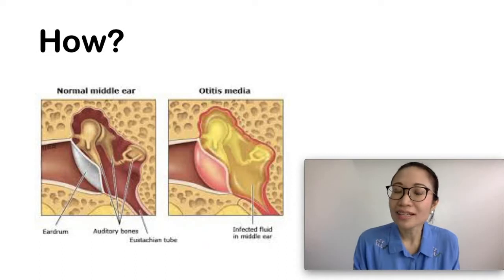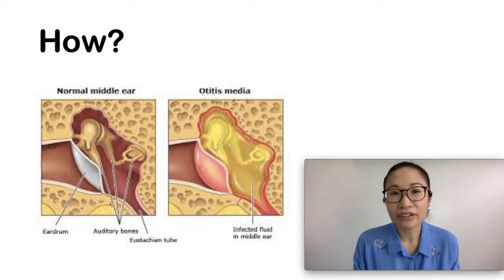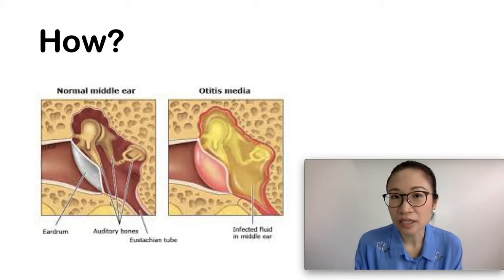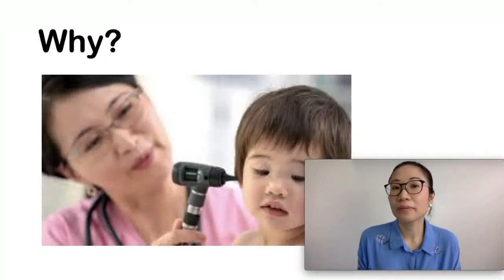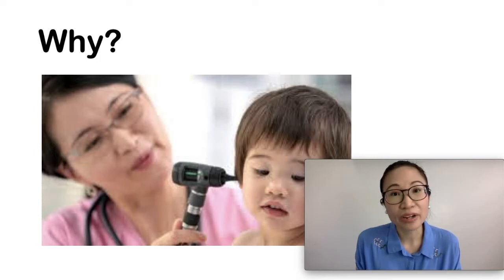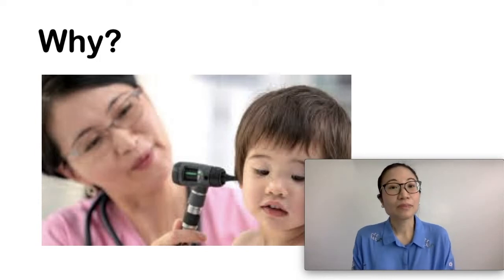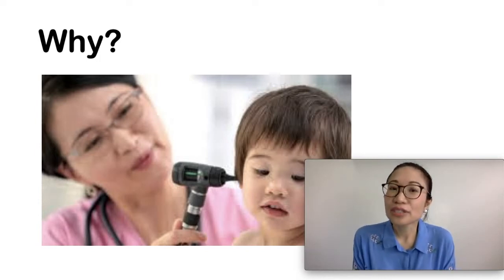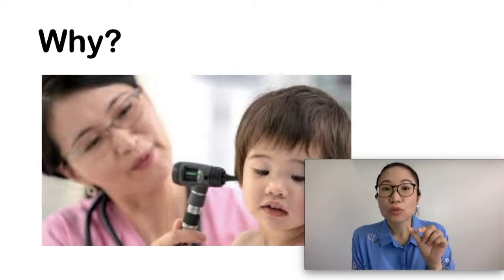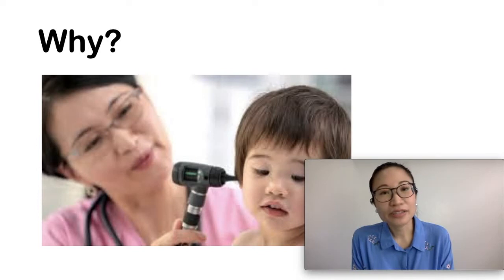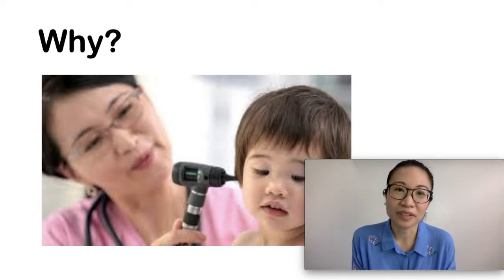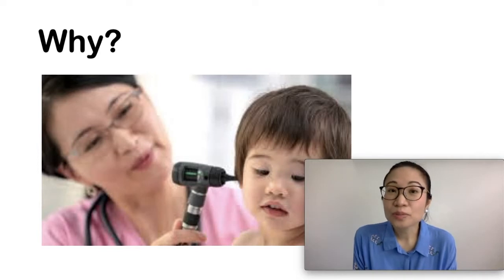When this happens, viruses and bacteria can infect and form pus. So why are kids prone to get middle ear infections compared to adults? In kids, their eustachian tubes are shorter and more horizontal, which makes it easier for viruses and bacteria to get into the middle ear. Also, their tubes are narrower, so it's easier to get blocked.